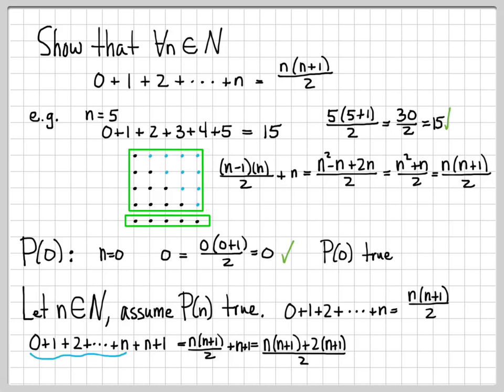And now we're almost there. If we look at this, we see two n plus 1 terms. So I can actually factor out the n plus 1 and write it as n plus 1 times n plus 2. And now look what we have here. This is exactly P of n plus 1.